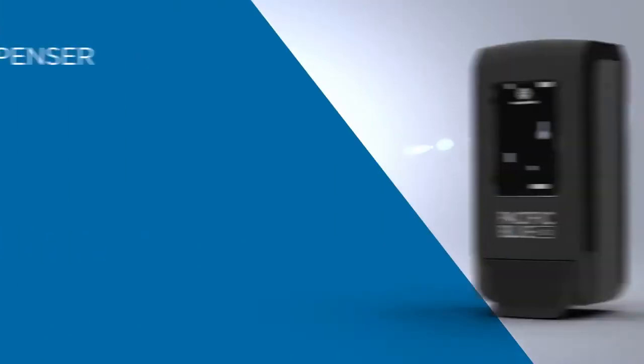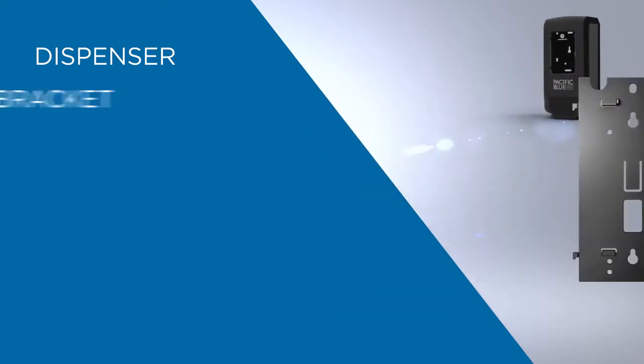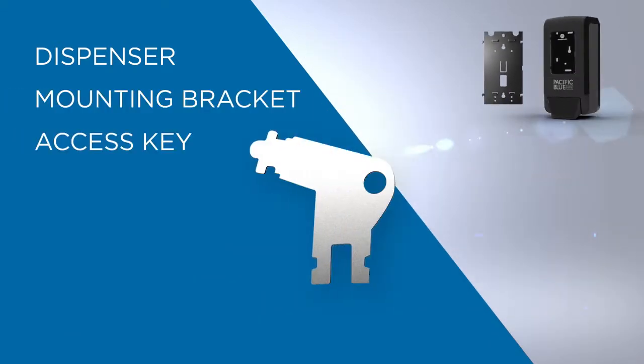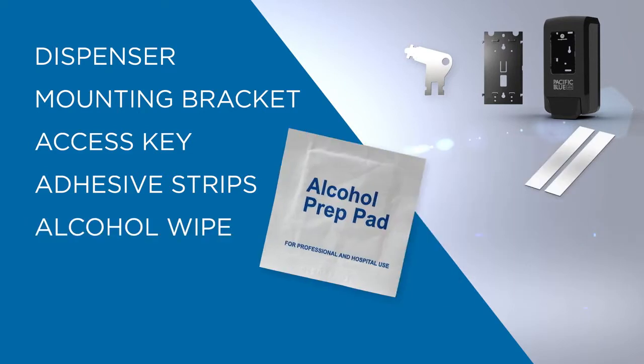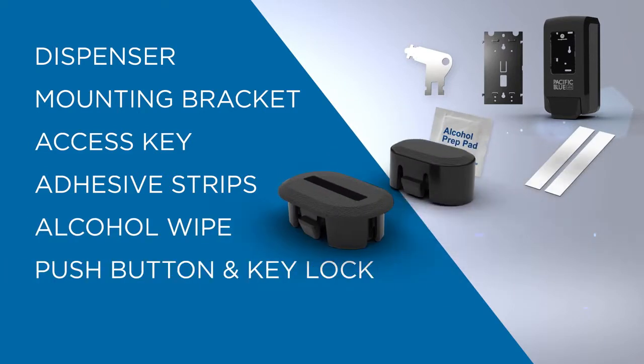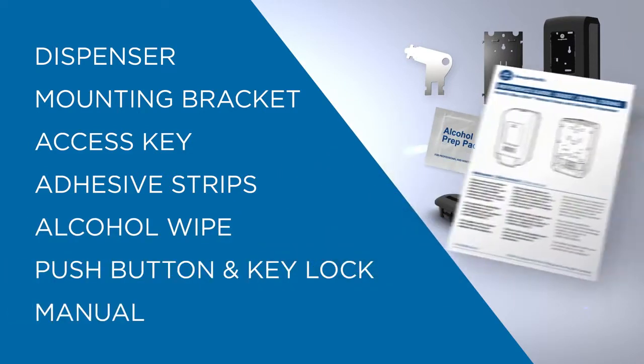Inside the box you'll find the dispenser, mounting bracket, access key, adhesive strips, alcohol wipe, push button and key locks, and manual.